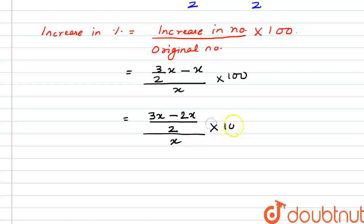Multiplied by 100. So 3x minus 2x is x, divided by 2, upon x, into 100. We can see that x and x will cancel out.